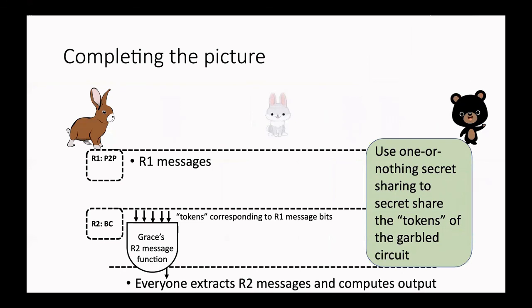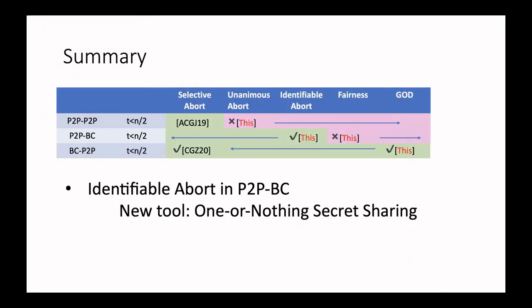Realizing this mechanism is the last piece needed to complete our protocol. One-or-nothing secret sharing guarantees that the parties agree on the correct token and then the garbled circuit can be evaluated, or some cheating will be detected. To summarize: in our work we give both possibility and impossibility results for the honest majority setting when we allow broadcast in one or both of the two rounds. In particular, we construct a protocol achieving identifiable abort when broadcast is allowed only in the second round — the best security guarantee achievable in that setting — using the new tool of one-or-nothing secret sharing, which can be of independent interest. Thanks a lot.